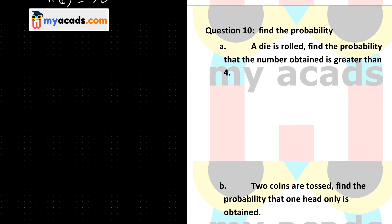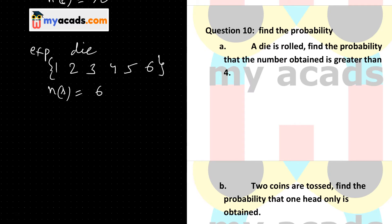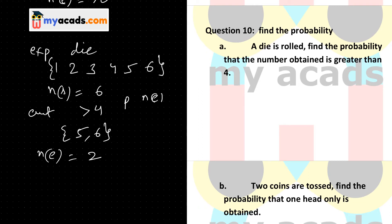Now question 10 part A: a die is rolled. Find the probability that the number obtained is greater than 4. When a die is rolled, the sample space is {1, 2, 3, 4, 5, 6}, so NS is 6. The event is numbers greater than 4, which gives us {5, 6}, so NE is 2. The probability is NE by NS, which is 2 by 6, simplifying to 1 by 3.